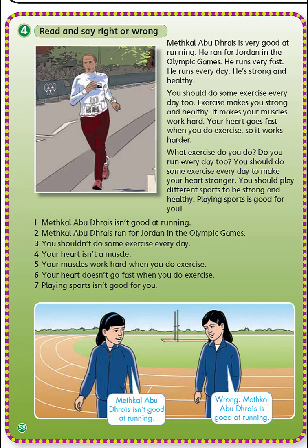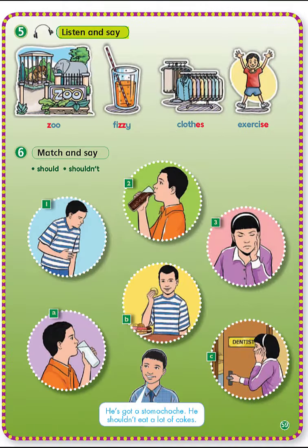You should play different sports to be strong and healthy. Playing sports is good for you. Vocabularies: at running = في الجري. Run = ركضة. Olympic Games = الألعاب الأولمبية. Fast = سريع. Strong = قوي. Healthy = صحي. Exercise = تمرين. Exercise makes you strong and healthy أي تجعل التمرين الرياضي جسمك بصحة وبقوة. Muscles = عضلات. Heart = عضلة القلب. Then: Mithqal Abu Drees isn't good at running — wrong. Mithqal Abu Drees is good at running.